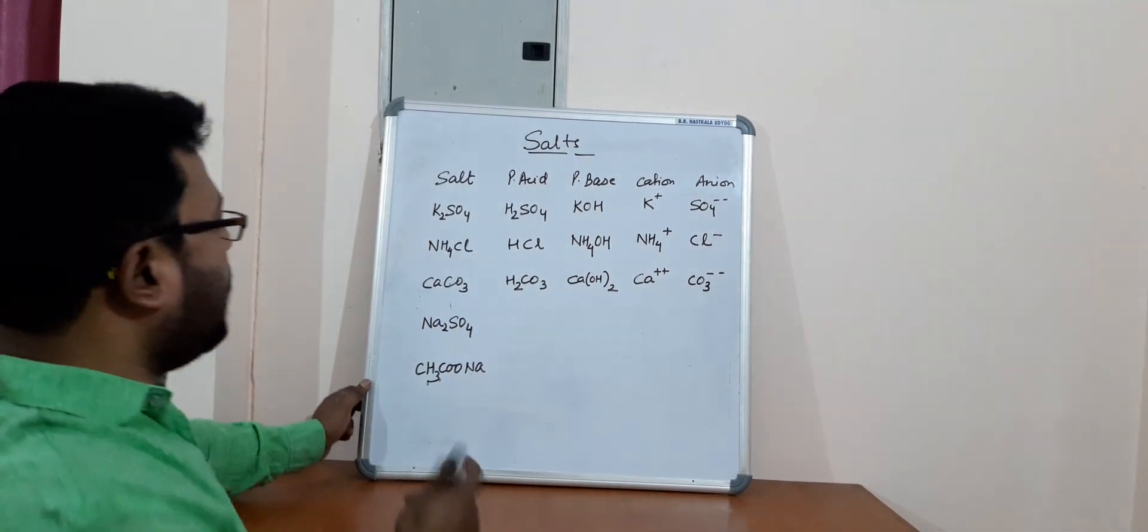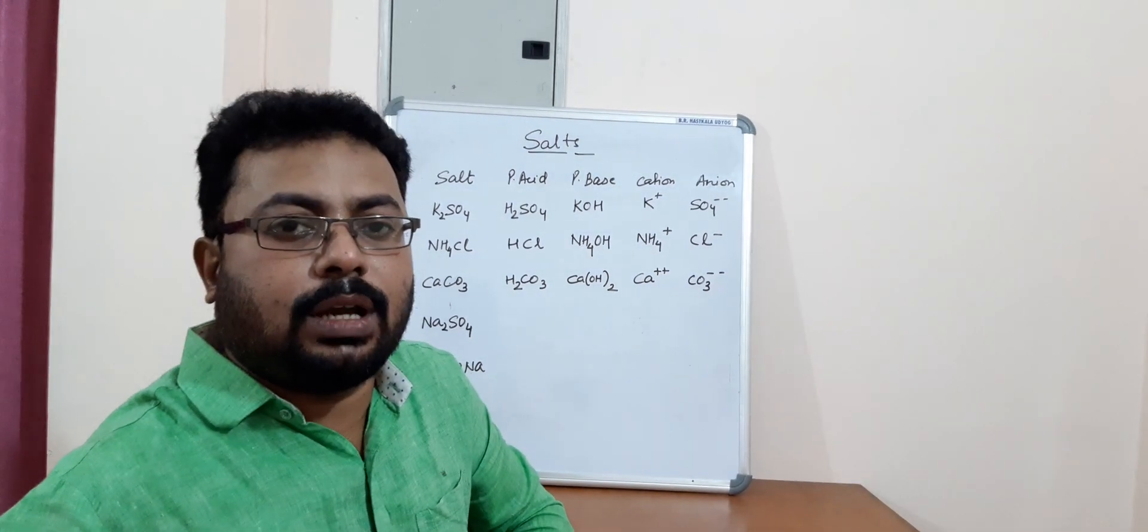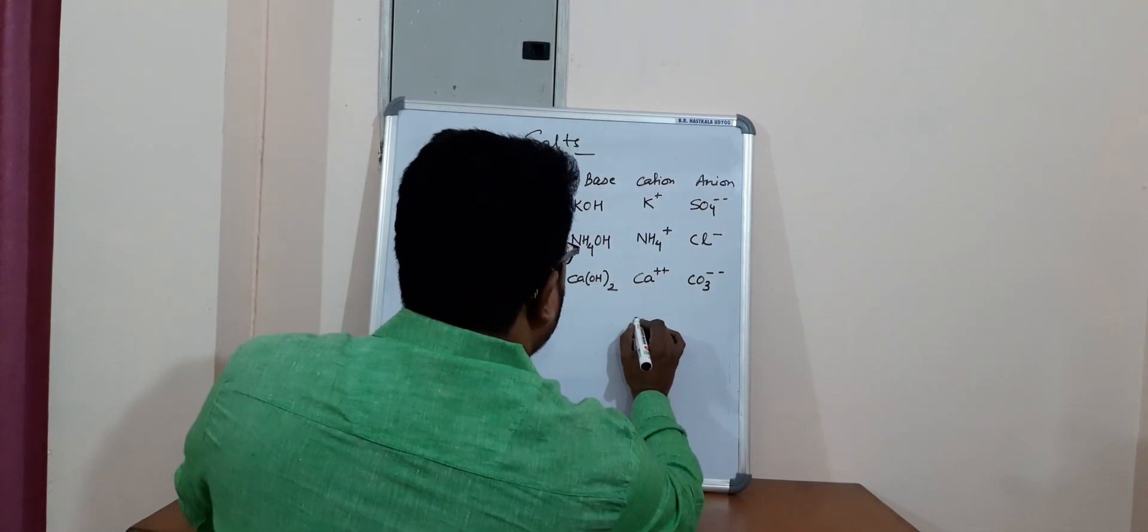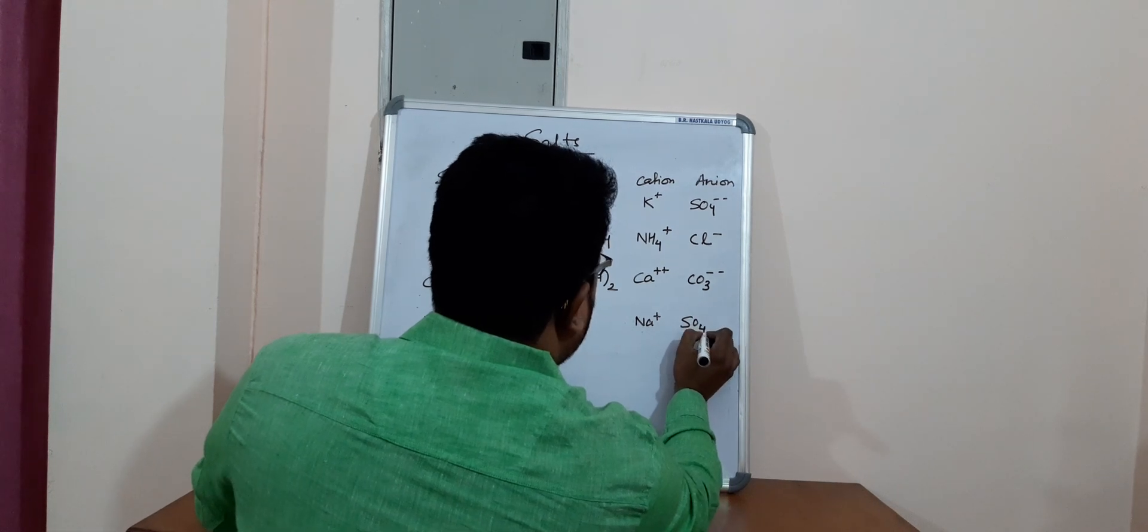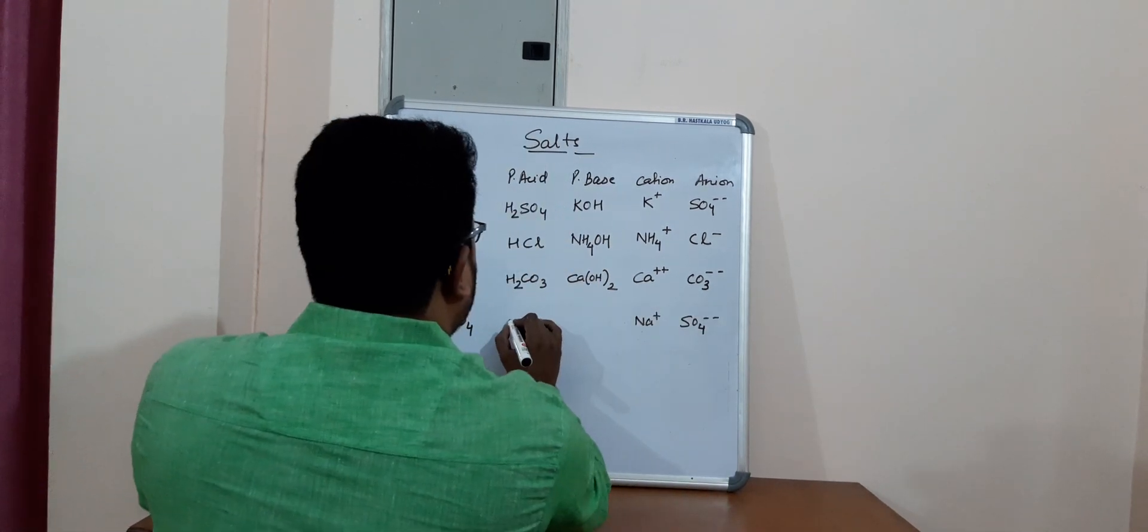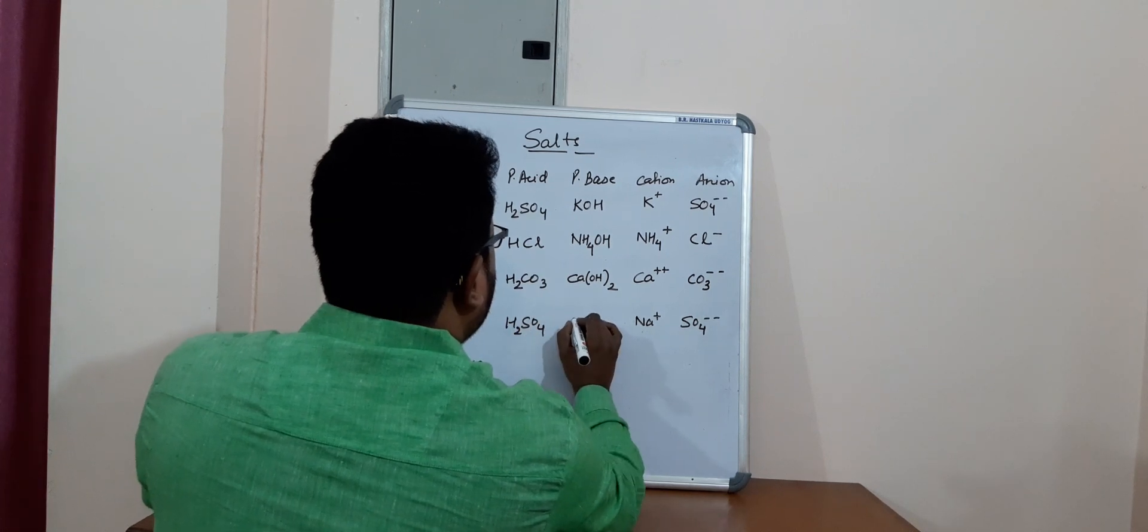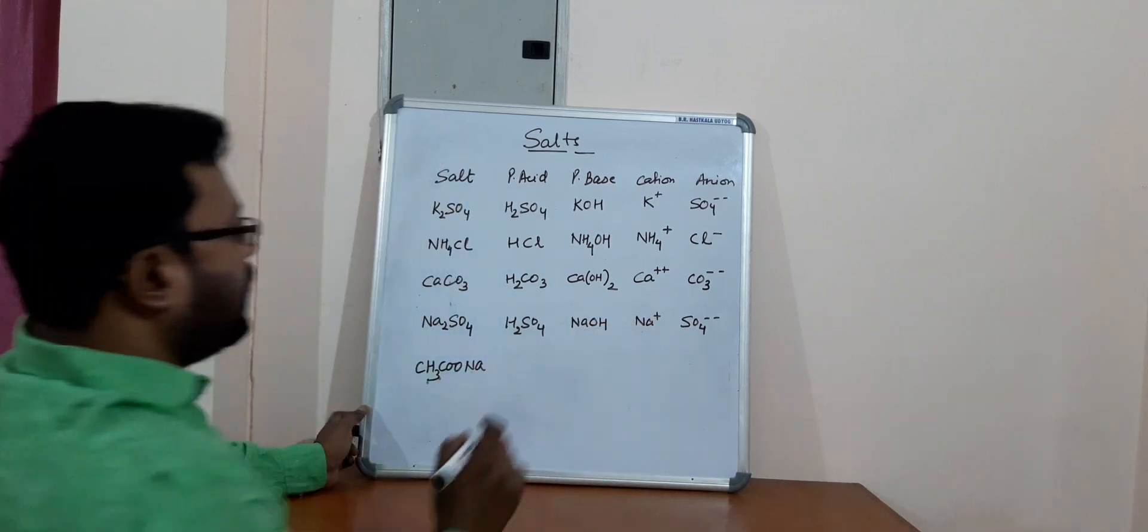So similarly, we have this. What is the name of this salt? Sodium sulfate. So sodium sulfate. So definitely the cation would be sodium, anion would be sulfate. So acid would be sulfuric acid and the base would be sodium hydroxide.